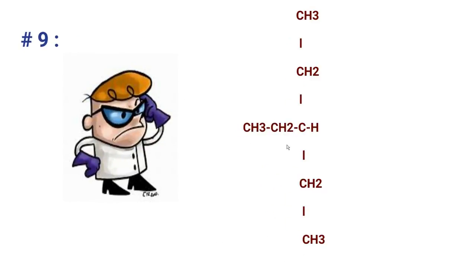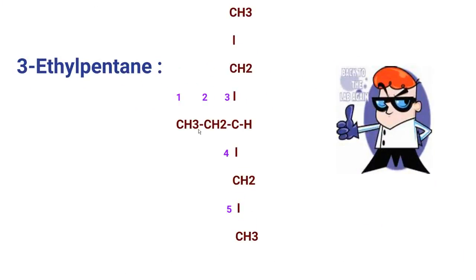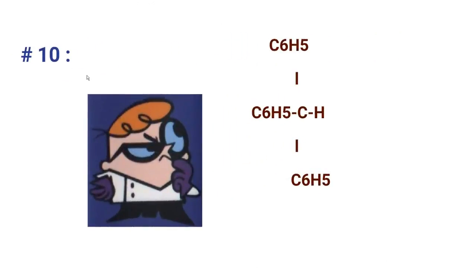Now name this compound. Write down the name and pause the video. The name of this compound is 3-ethylpentane: the chain has five carbons making it pentane, and an ethyl group is located on the third carbon.